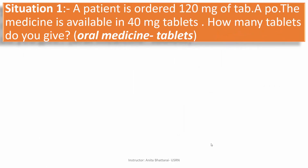Let's go through the situations and try to solve the problems. In situation 1, a patient is ordered 120 mg of tablet A for oral use. The medicine is available in 40 mg tablets. How many tablets do you give? This is an oral medicine tablet question.